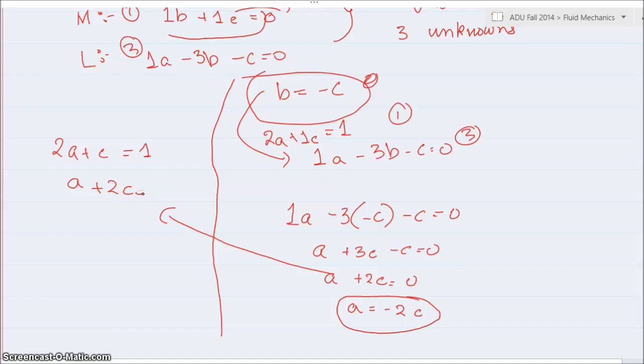Or better still, I'm going to directly substitute a into this equation. So 2, instead of a, I'm going to put minus 2c plus c is equal to 1, minus 4c plus c is equal to 1, minus 3c is equal to 1, c is equal to minus 1 by 3.